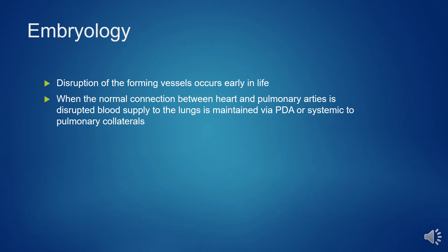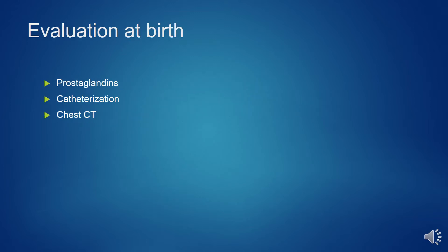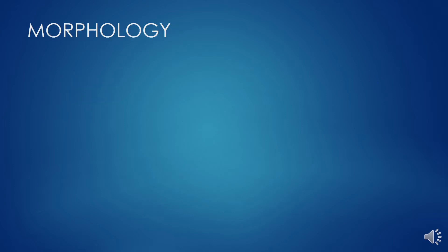Disruption of the forming vessels occurs early in life, and when the normal connection between the heart and pulmonary arteries is disrupted, the blood supply to the lung is maintained by the PDA or systemic pulmonary collaterals. After evaluation at birth, prostaglandin, catheterization, and chest CT scan should be done.